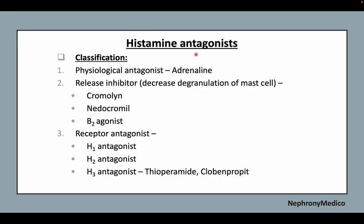Histamine antagonists include physiological antagonists like adrenaline, or releasing inhibitors like cromolin, nedocromil and beta-2 agonists, and receptor antagonists like H1 antagonists, H2 antagonists and H3 antagonists which include thioparamide, clobin, and propiet.